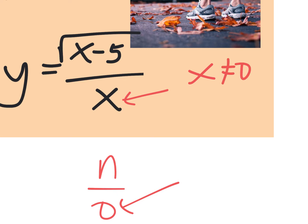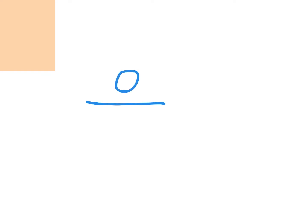But there's something else it can't be. If you put a zero on the top, you'd end up having a square root of a negative, which also causes a problem. You need numbers that are at least five. If you put in a five, you're okay. This is important to understand — it's not like a zero on the top is a problem. Zero divided by 14 is just zero. It doesn't crash the function. It doesn't cause an error. Your calculator would happily say the answer is zero.